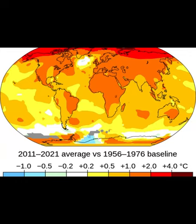Understanding Climate and Its Impact on Our World. Climate is the long-term pattern of weather conditions in a particular region, covering a wide range of atmospheric, geological, and oceanic interactions. It plays a crucial role in shaping the environment and influencing the various ecosystems and life forms on Earth.